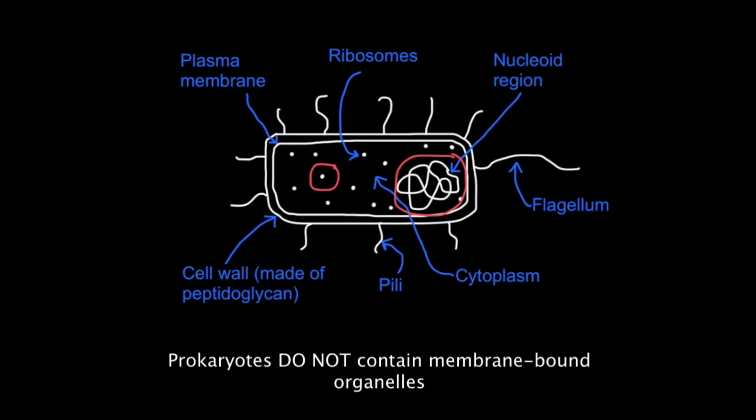And if they were membrane-bound, that would form a compartment. Which is why they say that prokaryotes have a simple cell structure without compartmentalization.